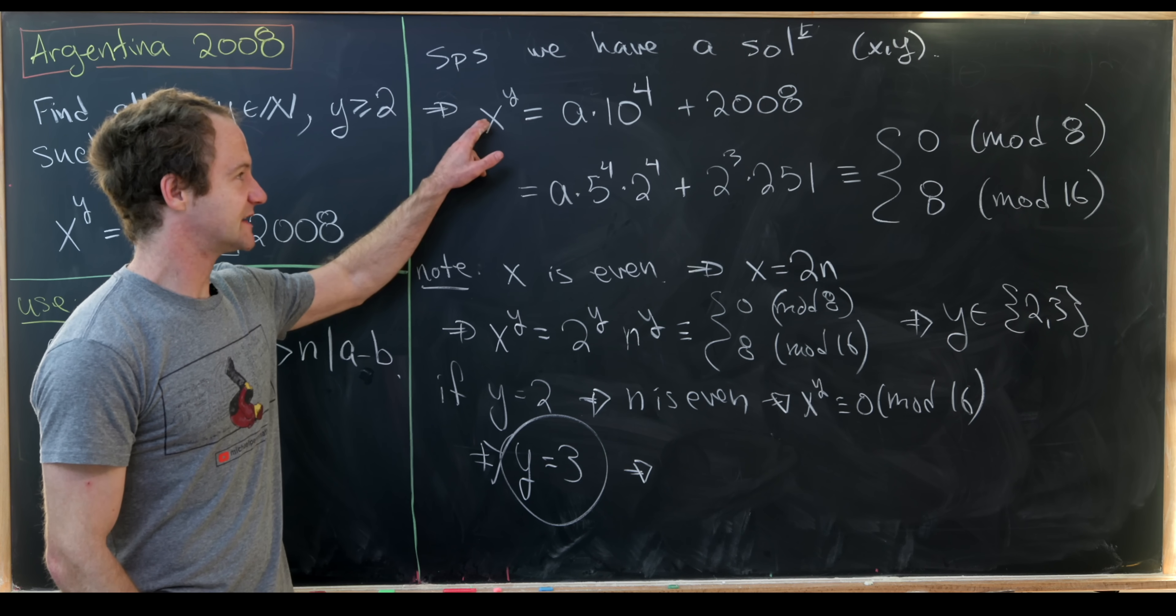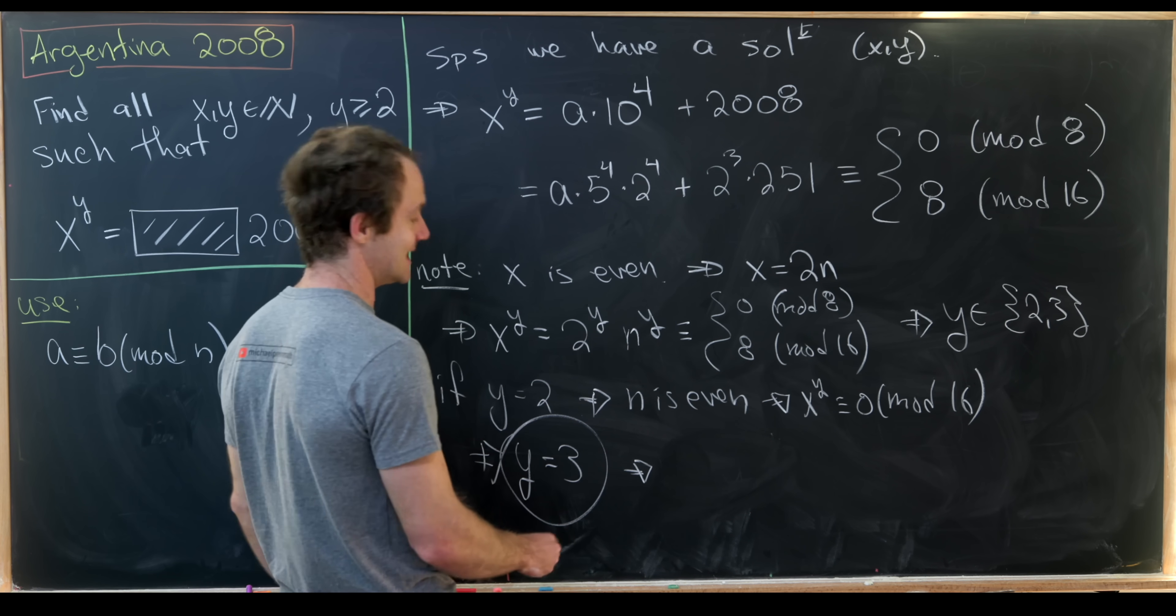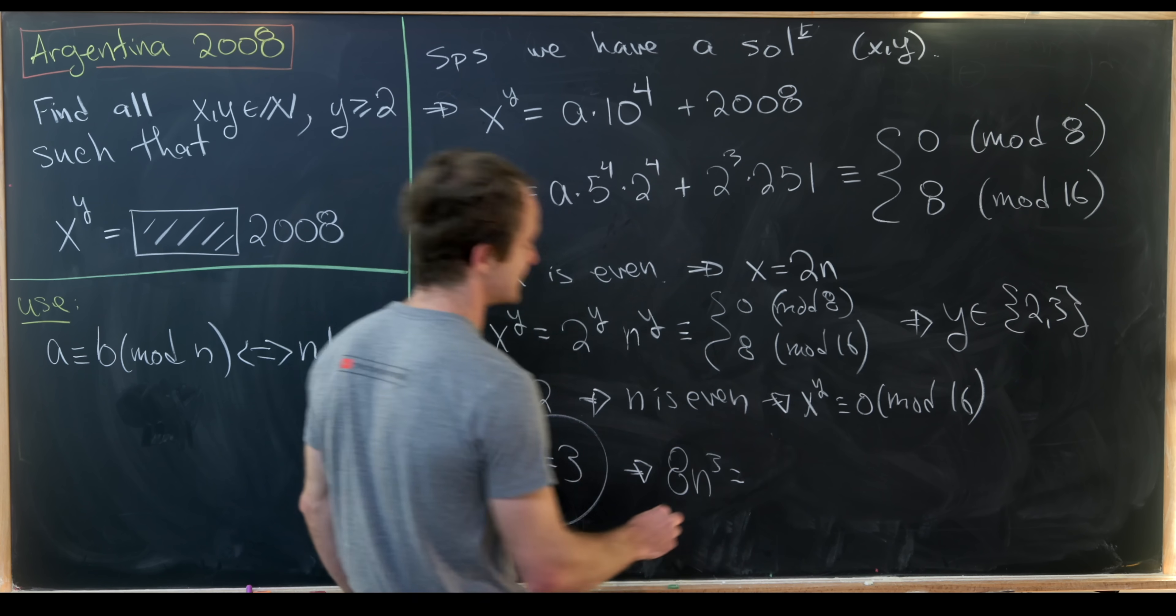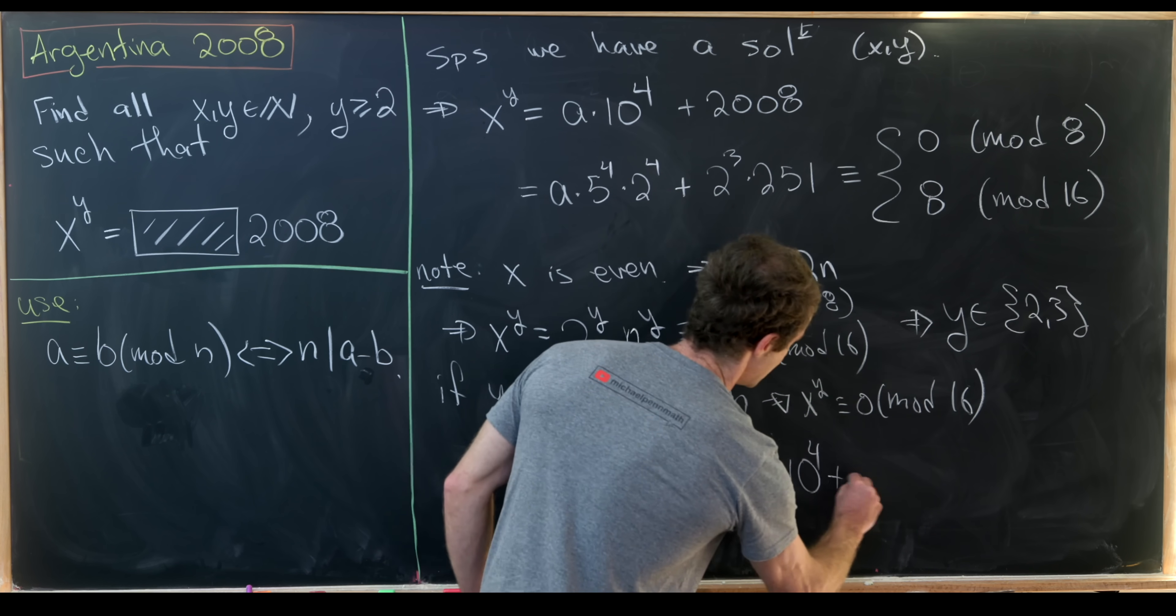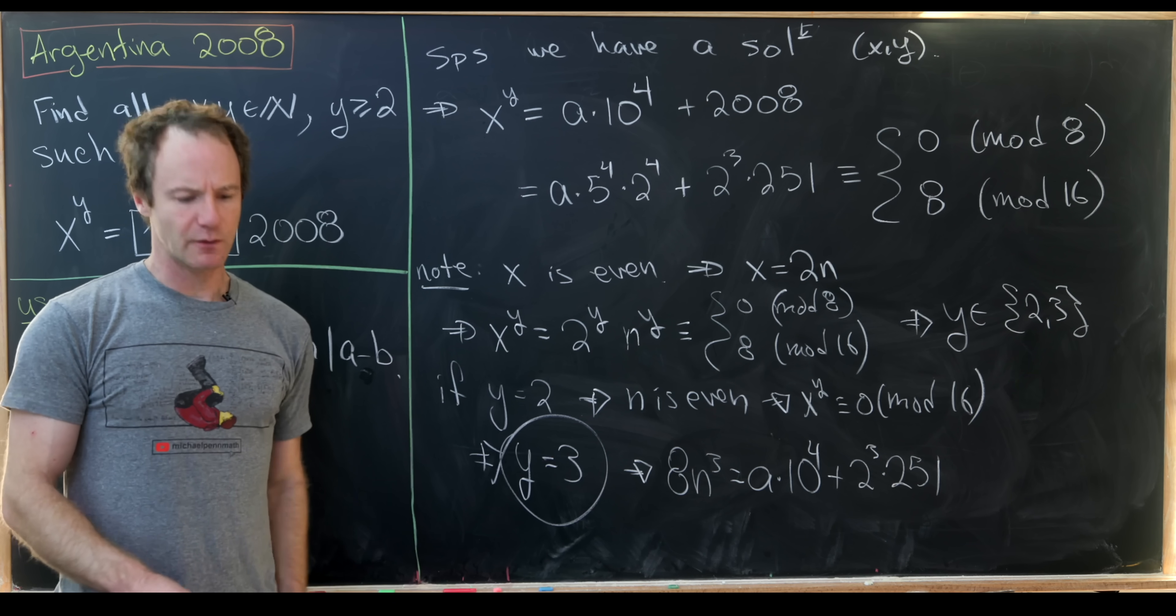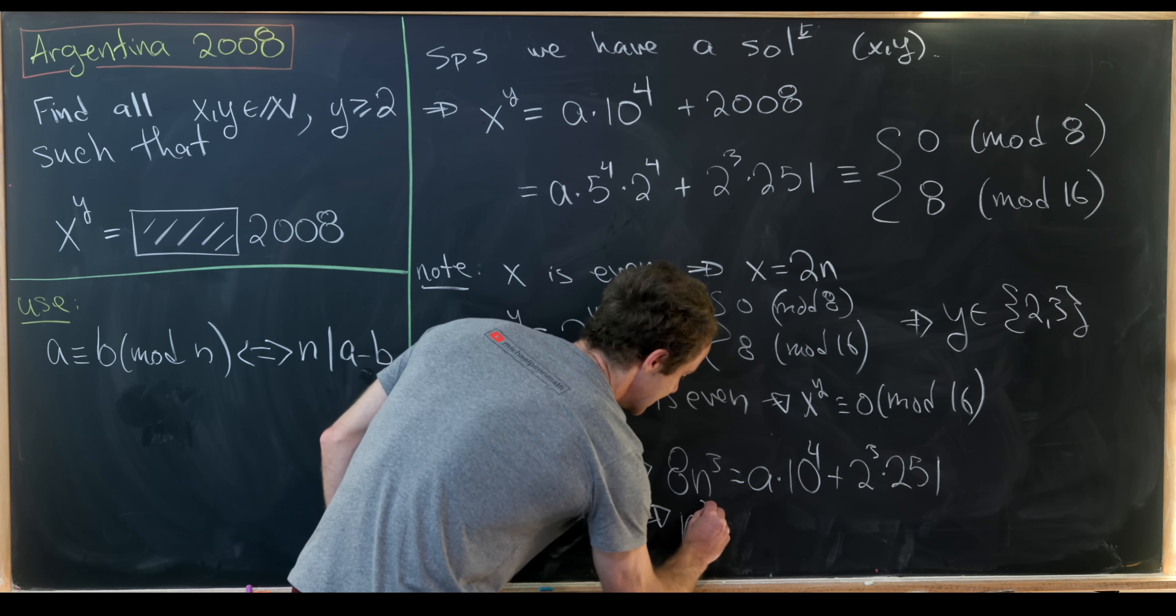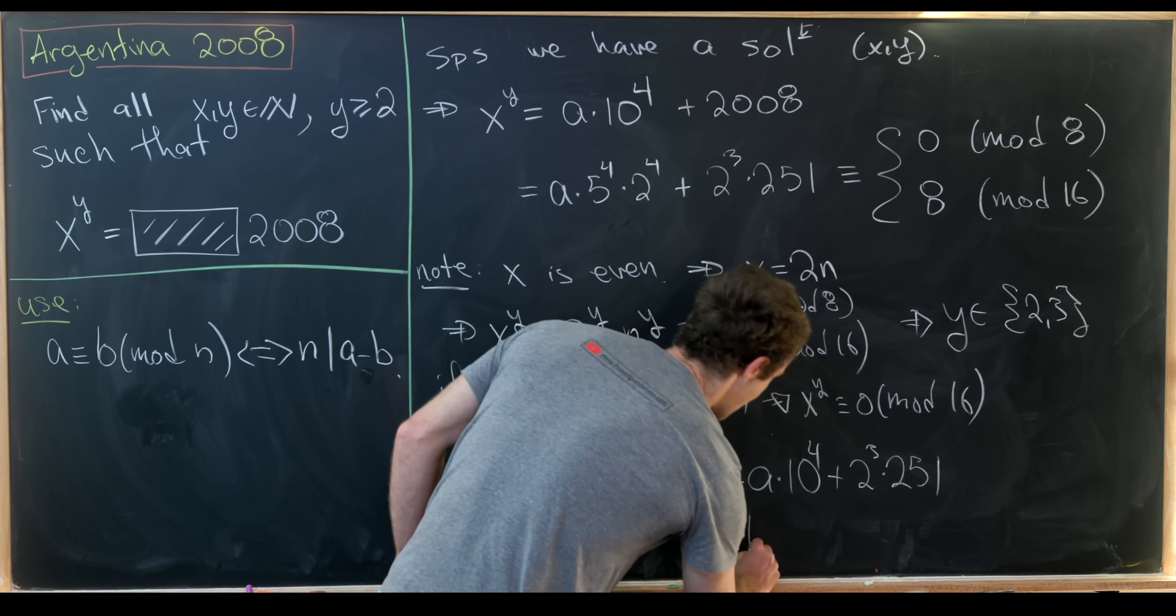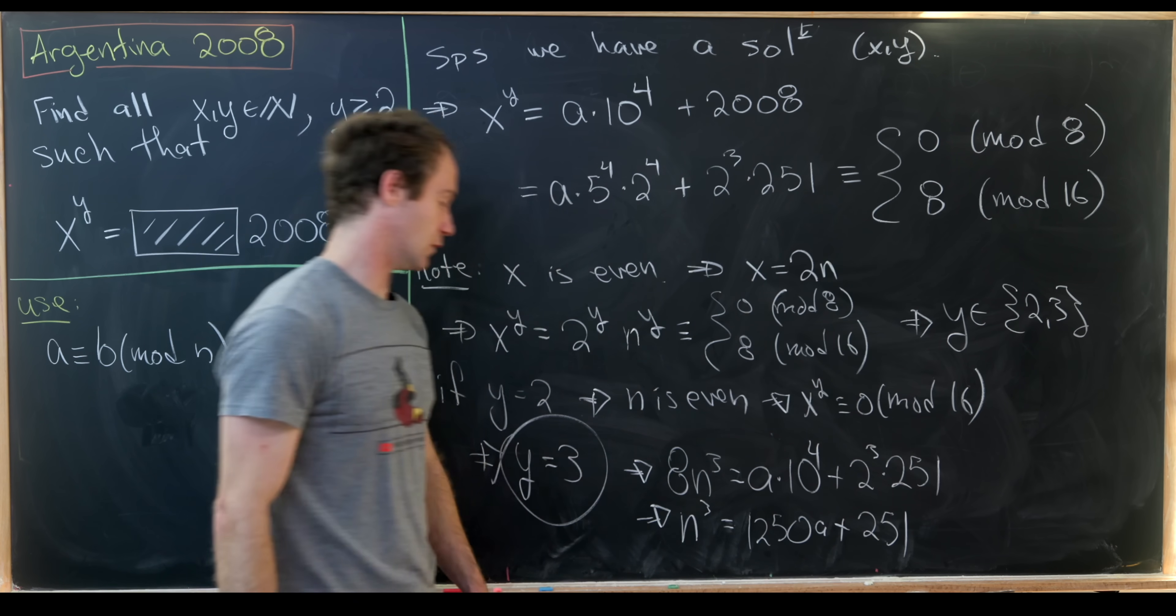But now let's plug that back into our original equation where we use the fact that x is 2n. And so we have 8n cubed is the same thing as a times 10 to the 4 plus 2 cubed times 251. Now we can divide both sides by 8 and we'll get n cubed is equal to 1250a plus 251.